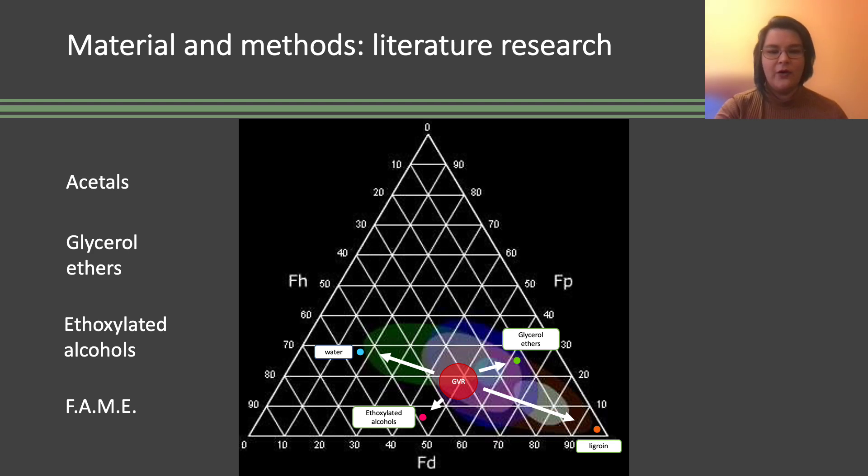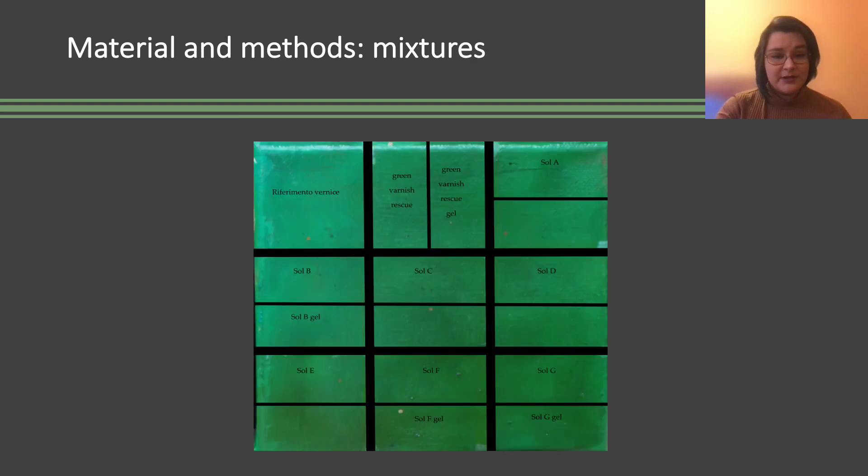glycerol ethers, ethylated alcohols, and FAME were tested and selected in order to change the polarity of the green varnish rescue along these four selected pathways. Seven mixtures were designed with acetals as the main component, and the exact composition cannot be revealed because there is a patent pending.